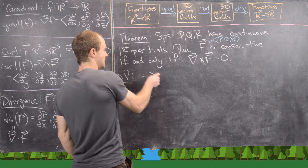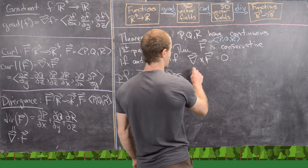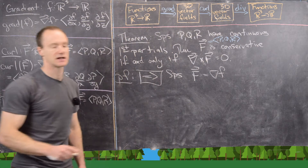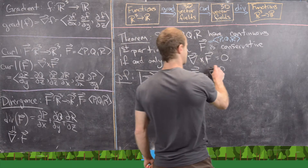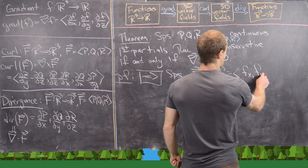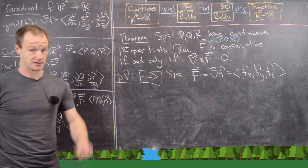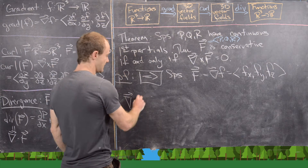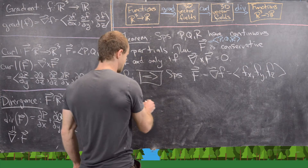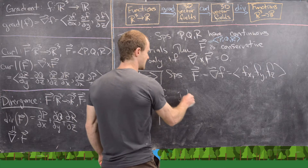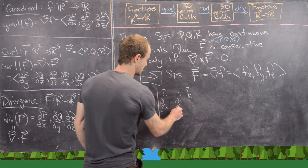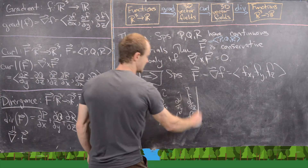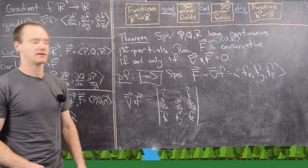For the forward direction, suppose F is conservative, which means F equals the gradient of a scalar function f. That means F = (f_x, f_y, f_z) — the gradient vector field. Now let's calculate the curl of F. Setting up the determinant with i, j, k; partial_x, partial_y, partial_z; and f_x, f_y, f_z, the first entry is f_{yz} − f_{zy}, the second entry is −(f_{xz} − f_{zx}), and the third is f_{xy} − f_{yx}.